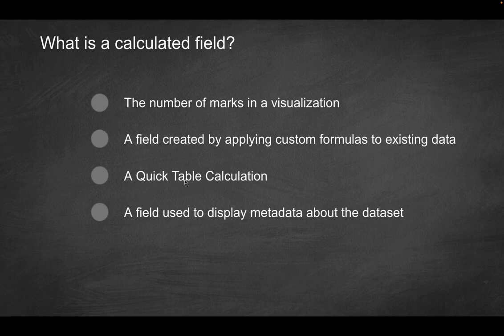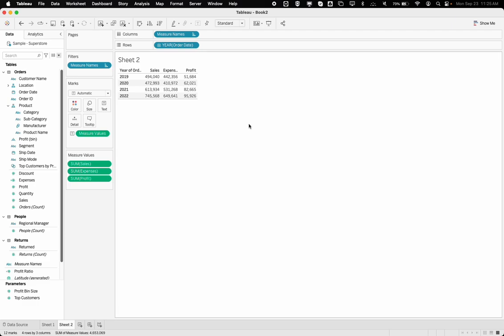Is it a quick table calculation? Well, what is a quick table calculation? So I have my sales over here for example and we're looking at it year over year. What if instead of the actual sales I maybe wanted to see the percent delta between the prior year and the current year? I can right-click on this measure.